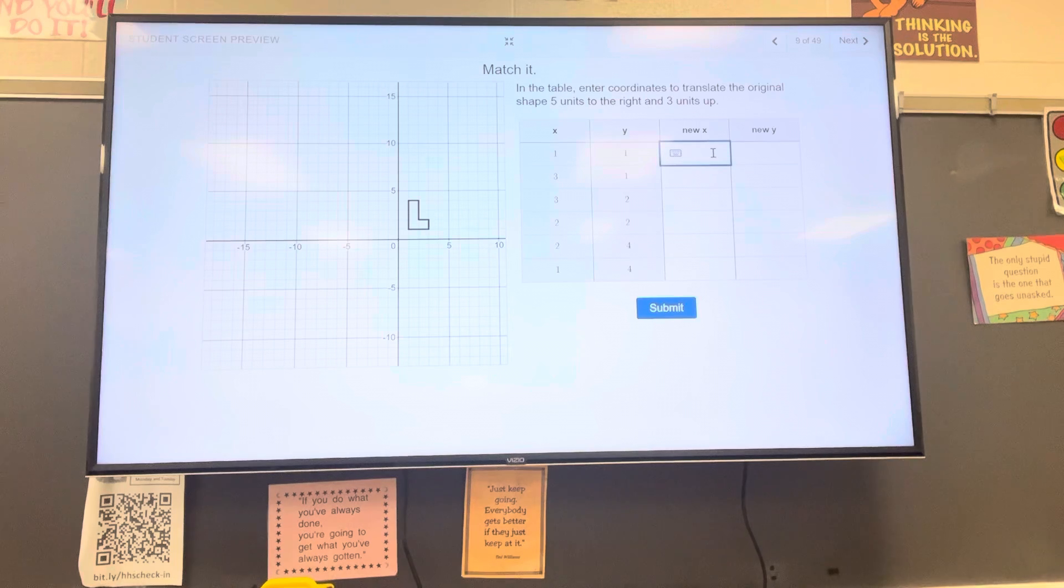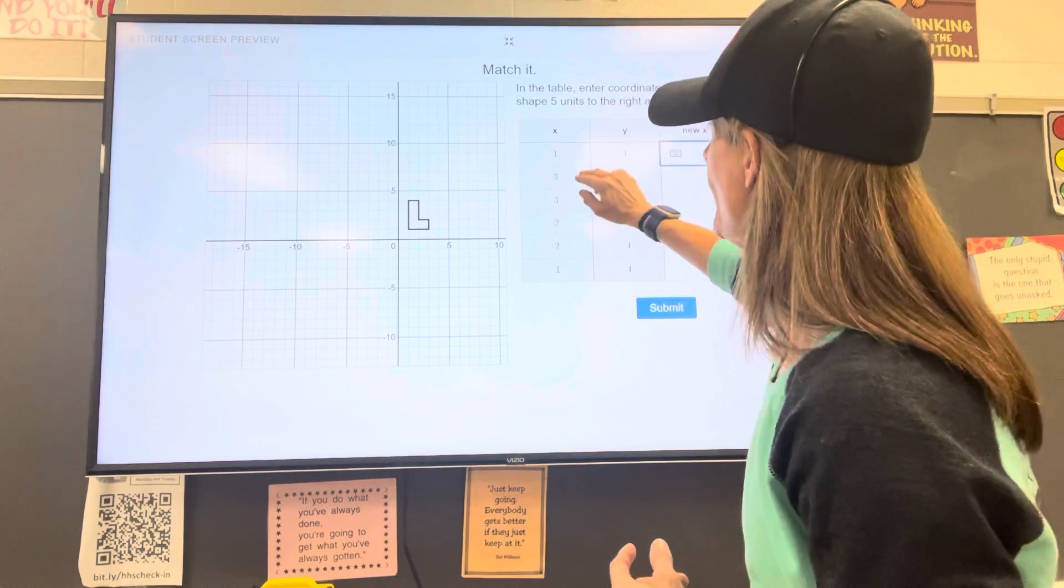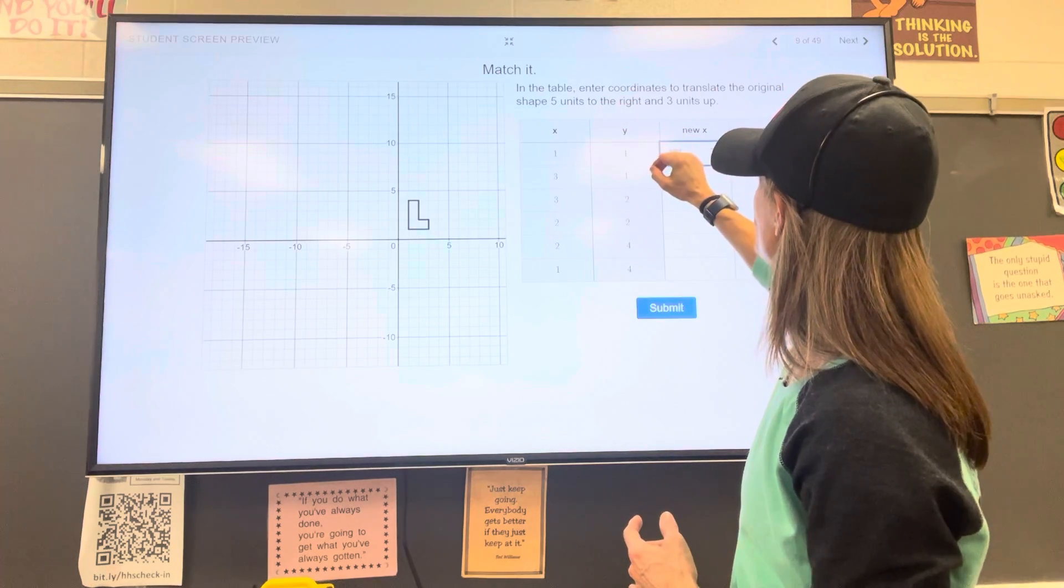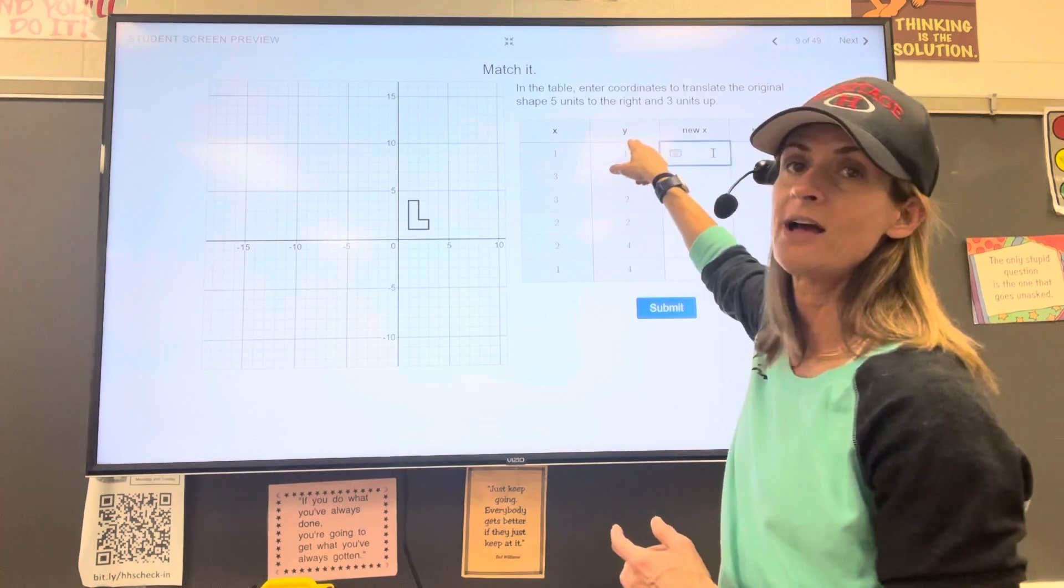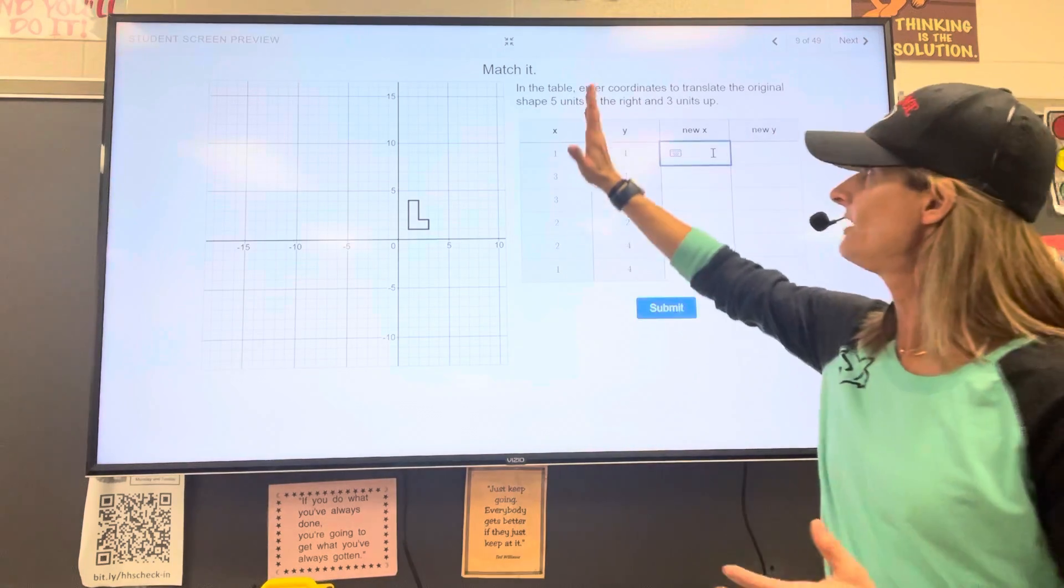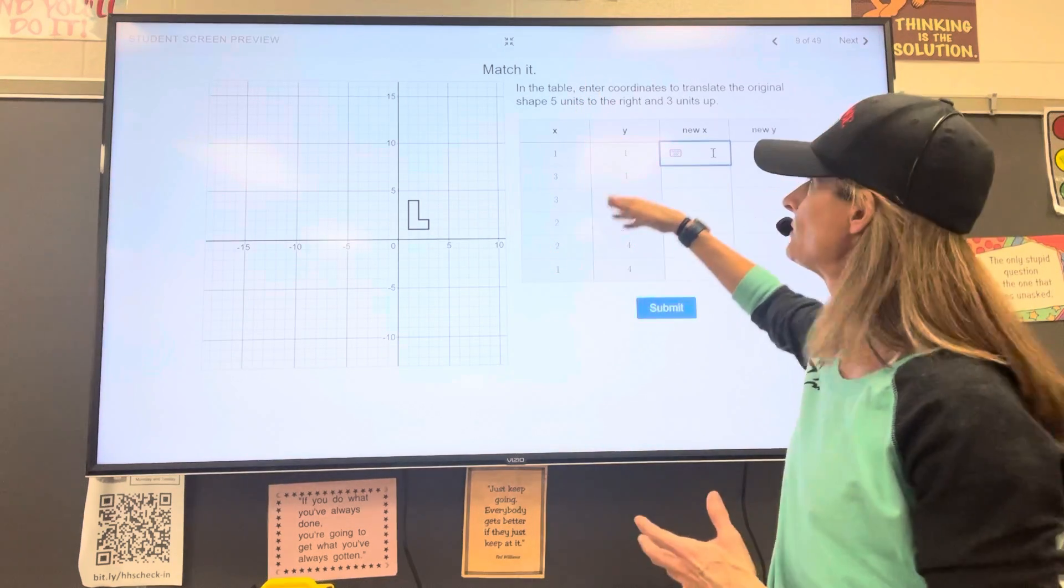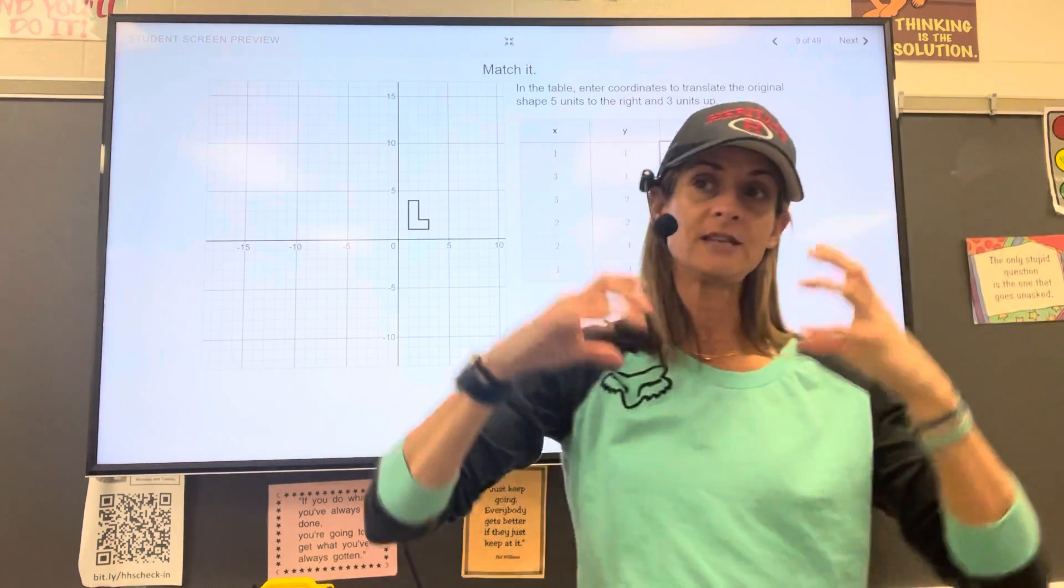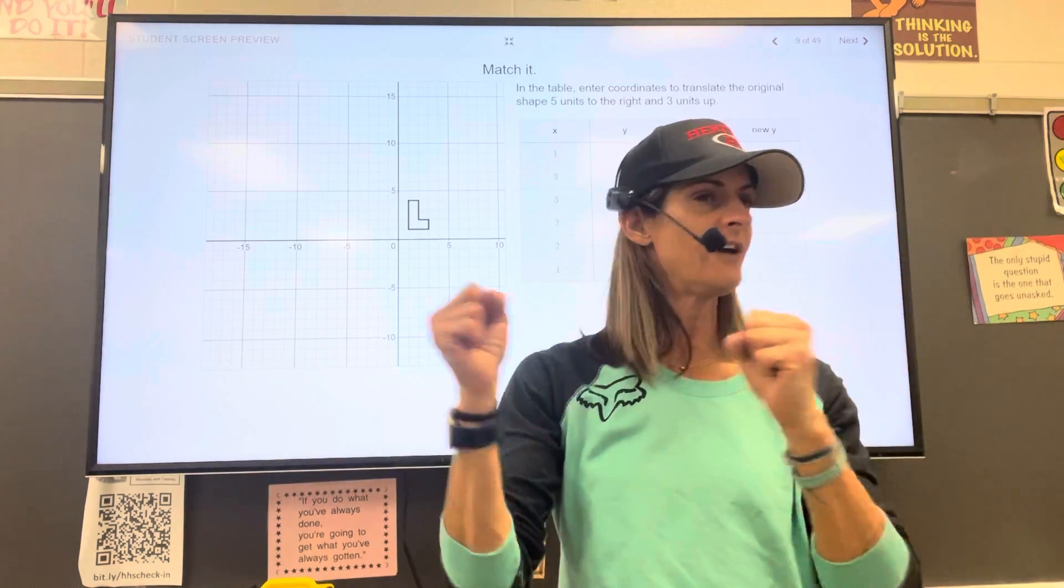Slide number nine. Now I want you to enter the coordinates. So here we are taking each of these ordered pairs, and we are adding five to the x value, and how much up? Three to the y value. So every x coordinate we add five to, every y coordinate we add three to. And we can do every single ordered pair separately. Every point is going to be moved left or right, up or down.